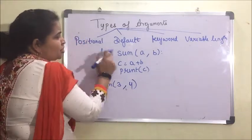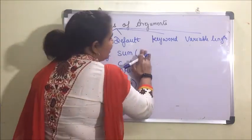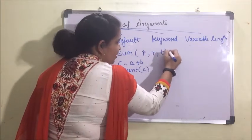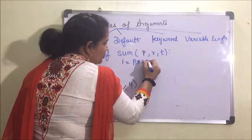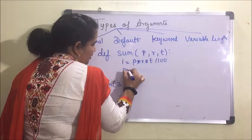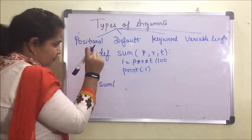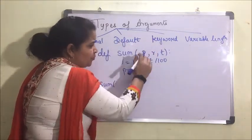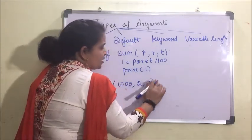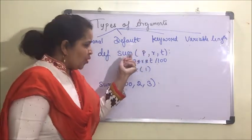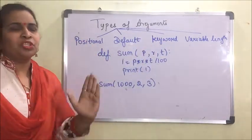This is positional argument. Suppose I want to find simple interest — we send p, r, t and the formula is i = p * r * t / 100, then print i. When calculating simple interest, the position matters: principal must go here, rate here, and time here. The position of all the arguments and parameters matters — that is why this is known as positional argument.